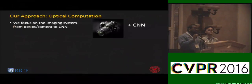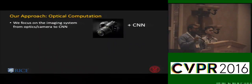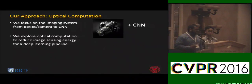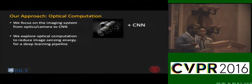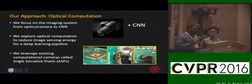Our approach is different. We are going to look at an end-to-end system from photons all the way to CNN output, and we want to analyze the contribution of sensing energy from the camera for the computer vision pipeline. We explore optical computation as a way to reduce image sensing energy in these pipelines, leveraging existing computational cameras known as angle-sensitive pixels.